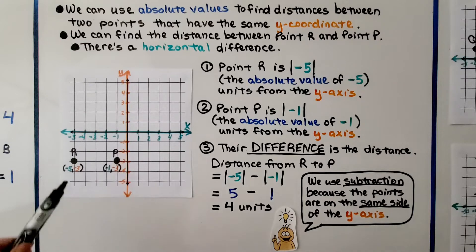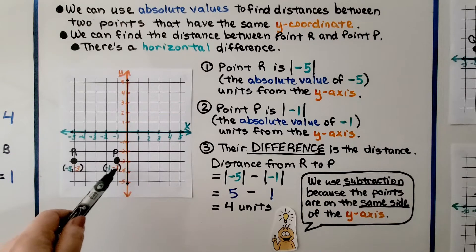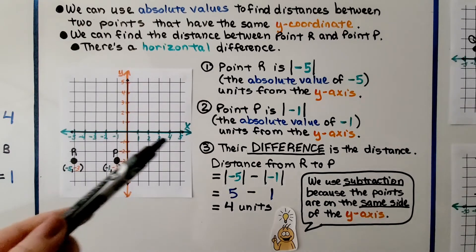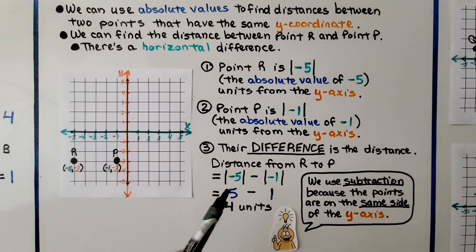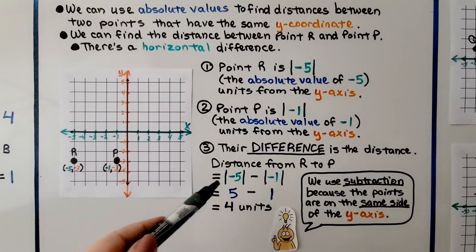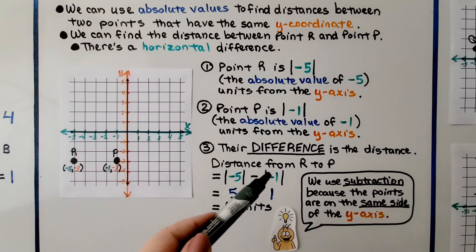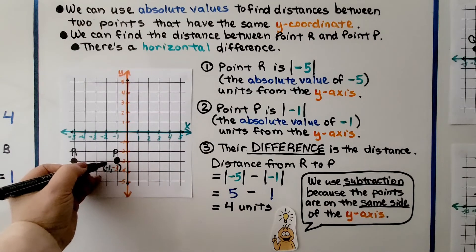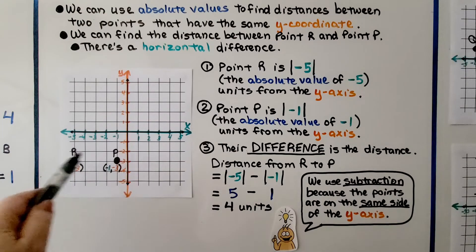Point R is the absolute value of negative five units from the y-axis, and their difference is the distance. The distance from R to P is the absolute value of negative five minus the absolute value of negative one. The absolute value of negative five is five, and the absolute value of negative one is one. Five minus one equals four units. We use subtraction because the points are on the same side of the y-axis.